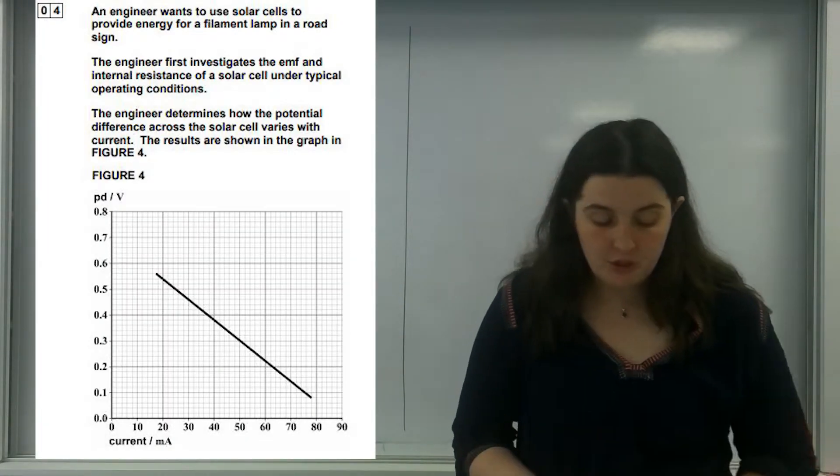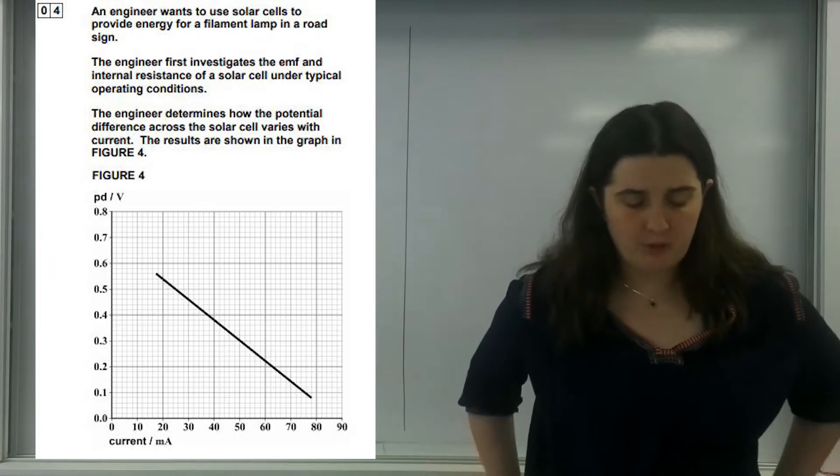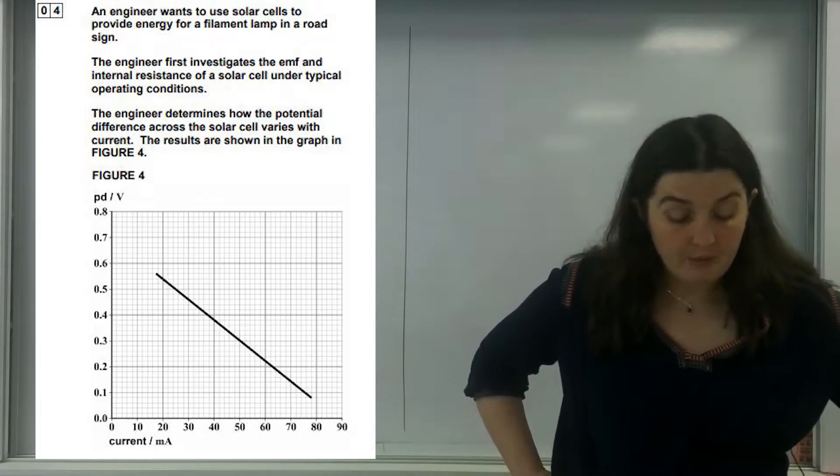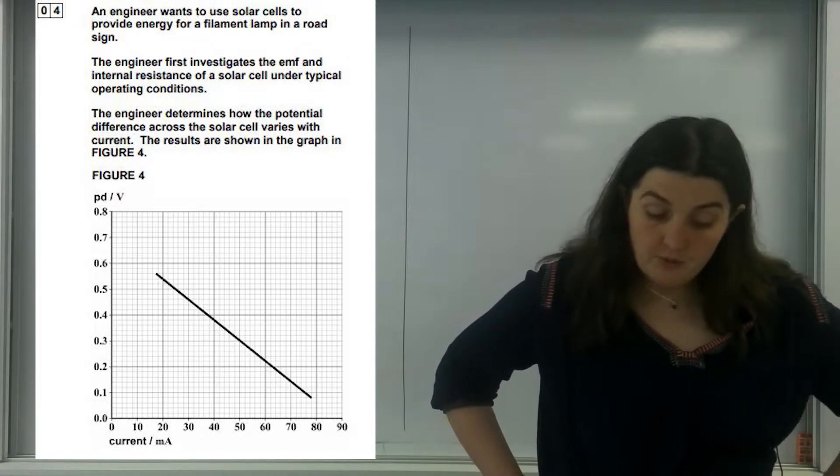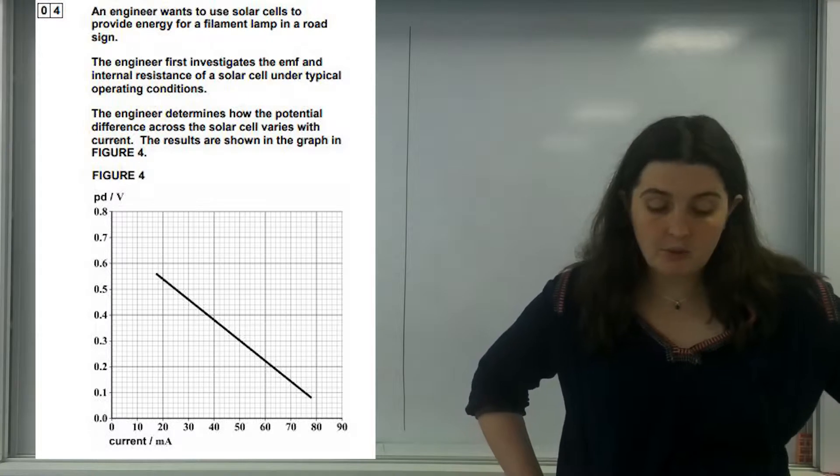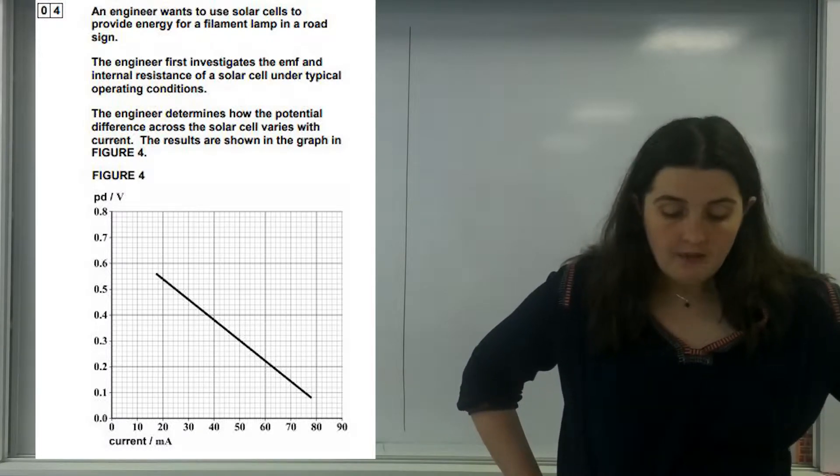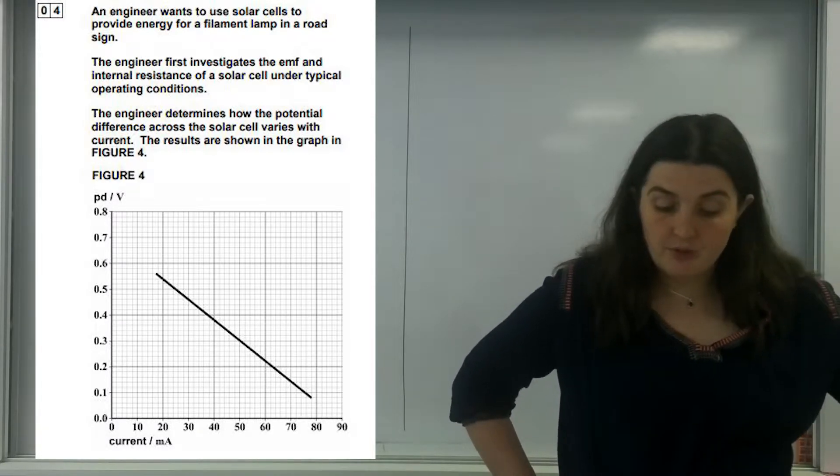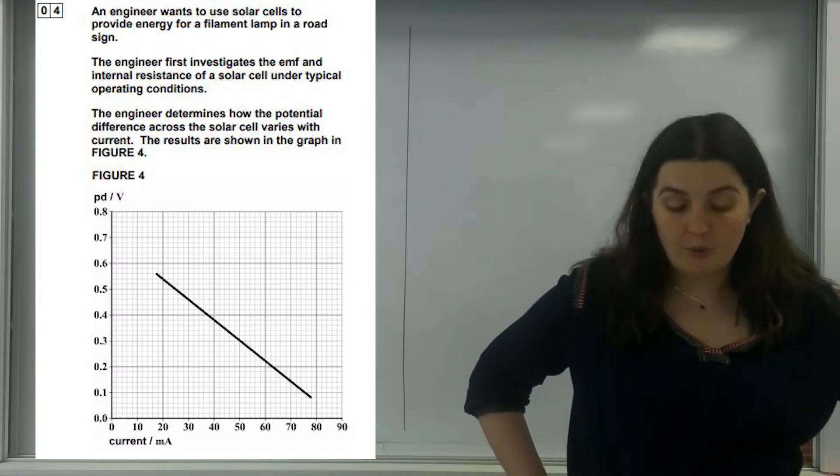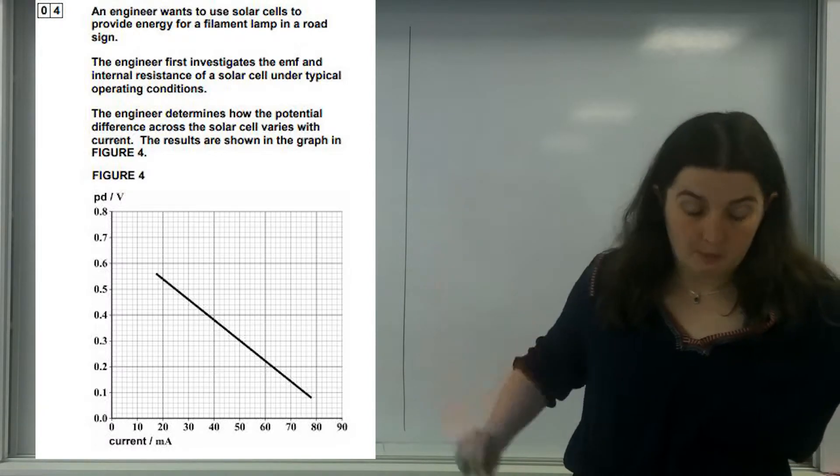An engineer wants to use a solar cell to provide energy for a filament lamp in a road sign. The engineer first investigates the EMF and internal resistance of a solar cell under typical operating conditions. The engineer determines how the potential difference across the solar cell varies with the current and the results are shown in figure 4.